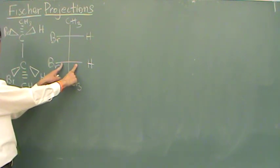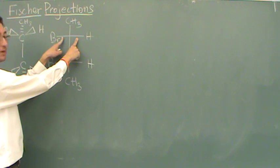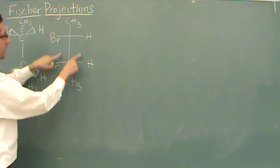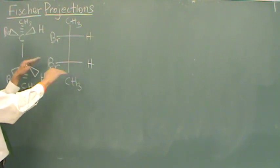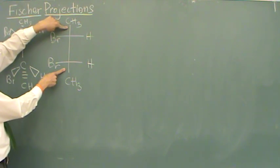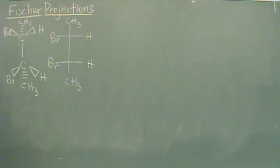You just need to know that these are wedges coming out at you. So things in the horizontal plane coming out at you. Things in the vertical plane like these two are going into the board away from you. That's the only part, the main part that you need to remember.